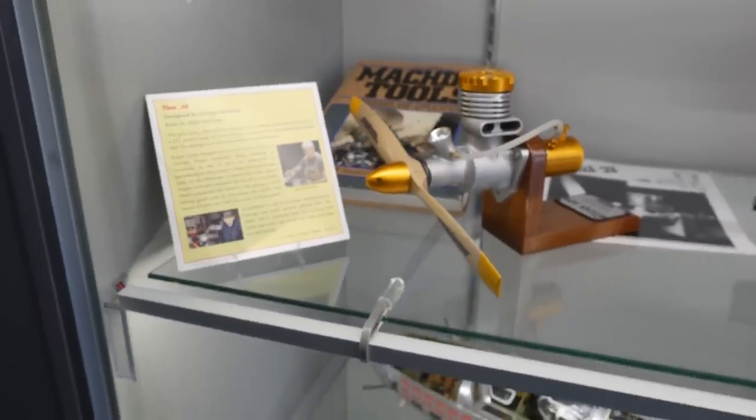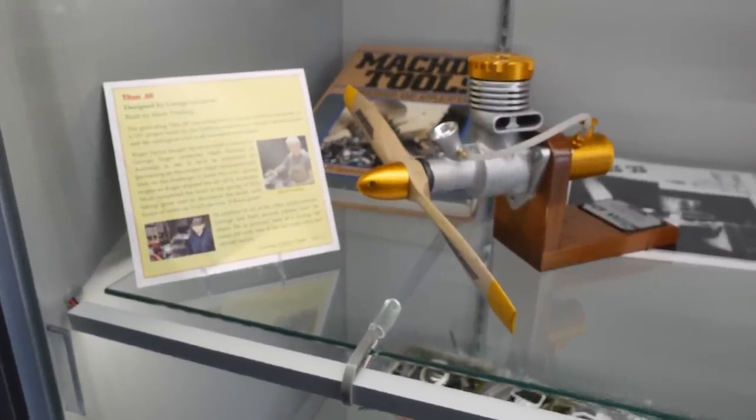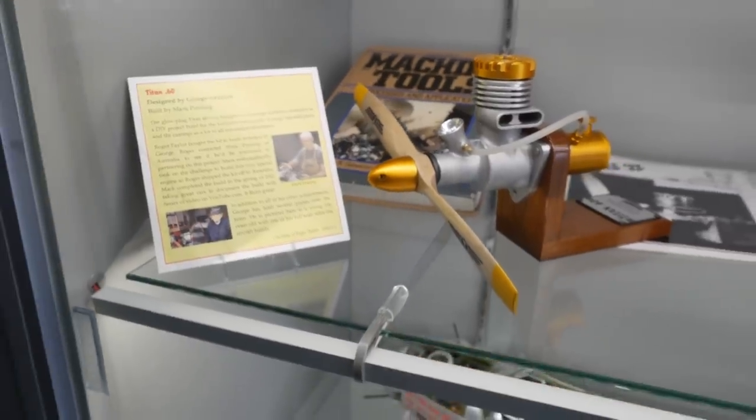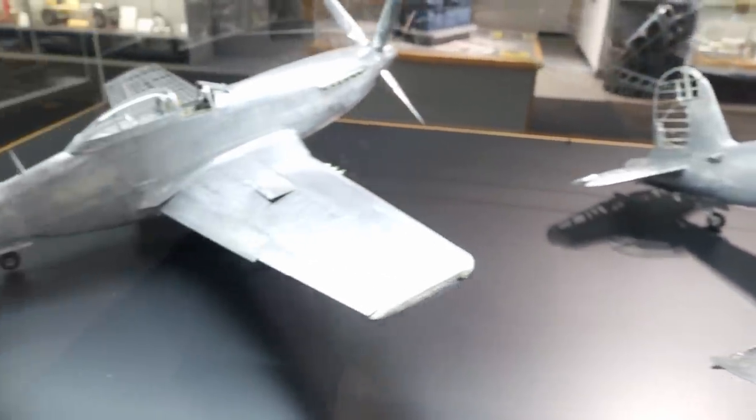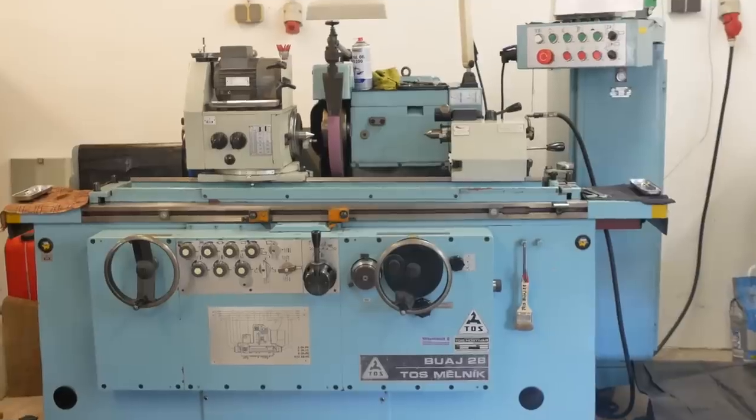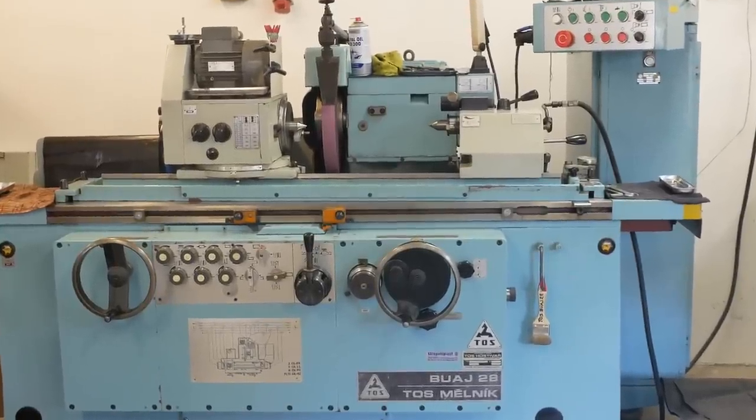And look at this, Mark Pressling's Titan 60 is on display, pride of place, very close to the entrance to the museum. Good one, Mark. If you're ever down here in Southern California, you've got to come and see this. It's just fantastic. Anyway, back to the grinder. Let's see what it does.